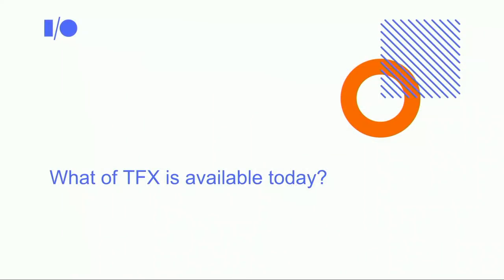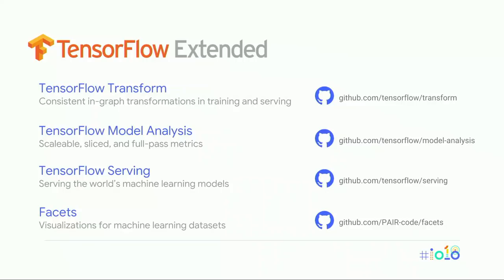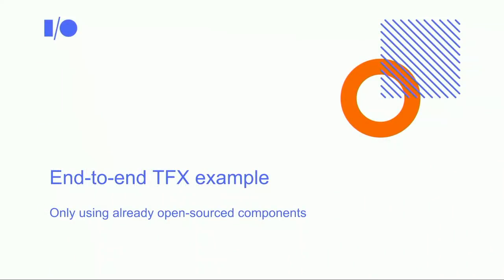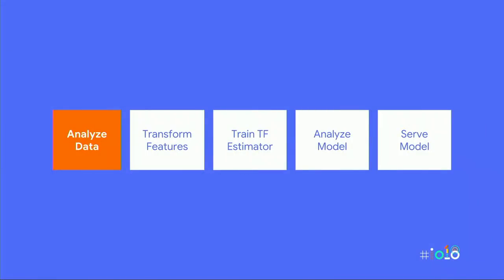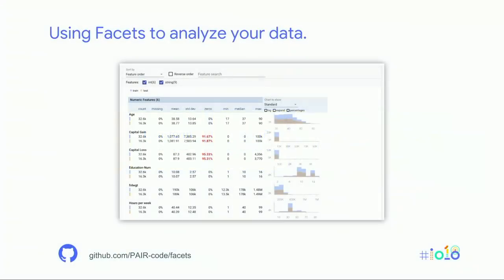Today we've open sourced a few key areas: transform, model analysis, serving, and facets. Each is useful on its own but much more so in concert with the others. Our goal is to take accumulated data and do something useful for our users. We start with step one: pulling data up in Facets to analyze which features might be useful predictors, look for anomalies — outliers or missing features — to avoid the classic garbage-in garbage-out problem, and to inform what data needs further preprocessing before ML training.